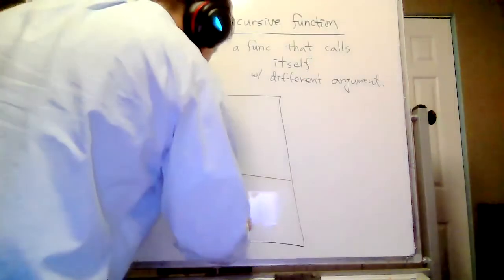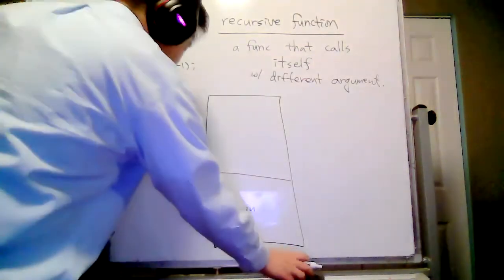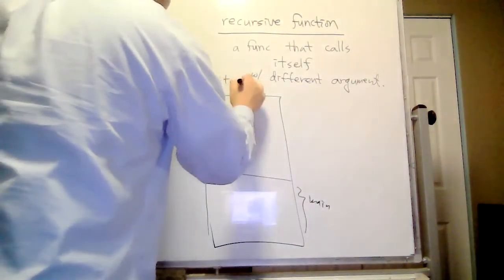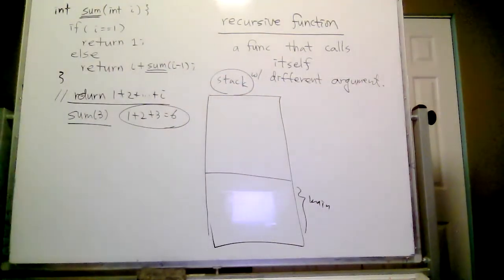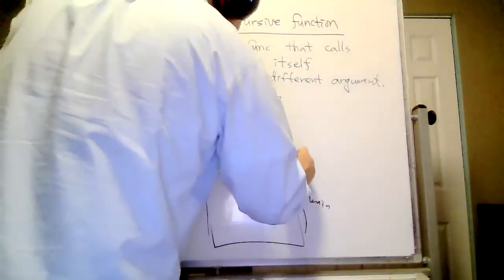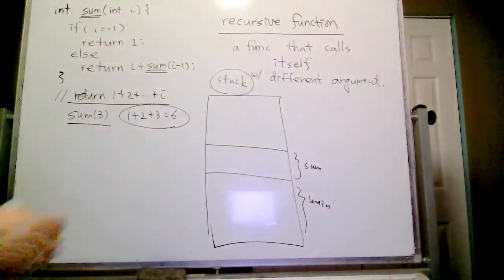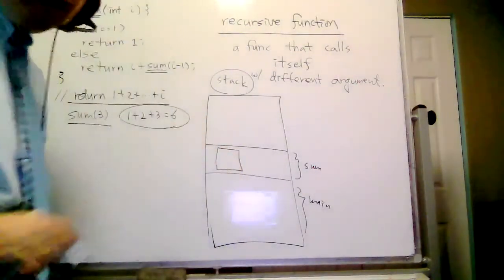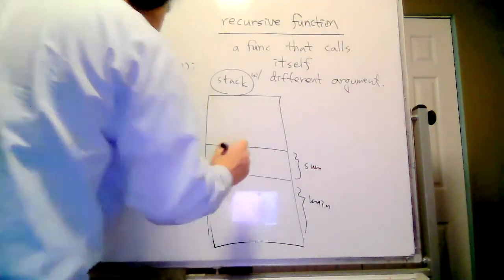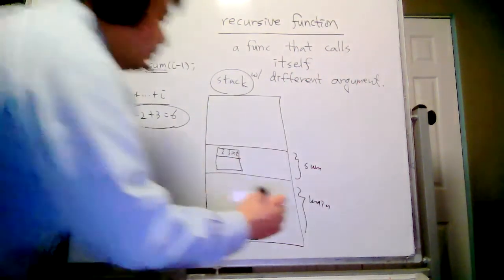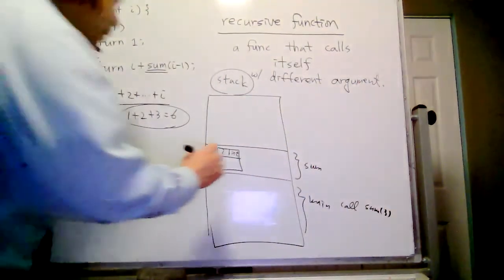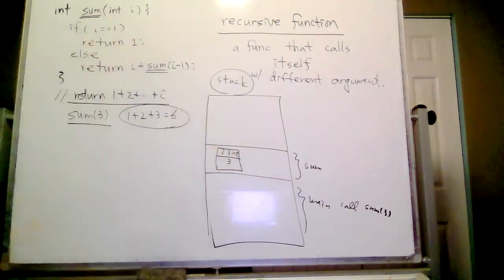So let's say this is the main function. Now in the main function, let's say sum(3) is called. That means a stack frame for sum is established. We have one input parameter: i, which is an integer. When sum(3) is called, the argument three is copied into the input parameter i.